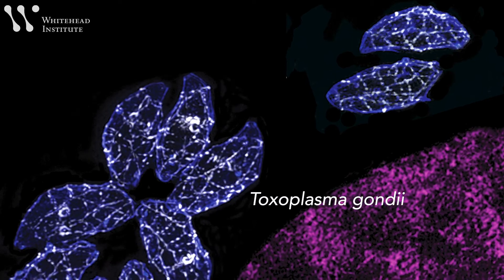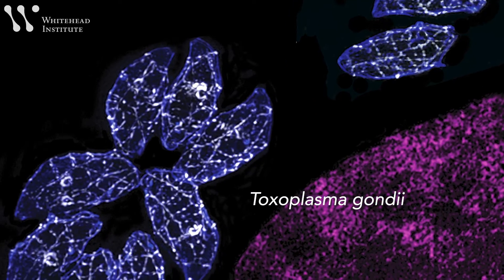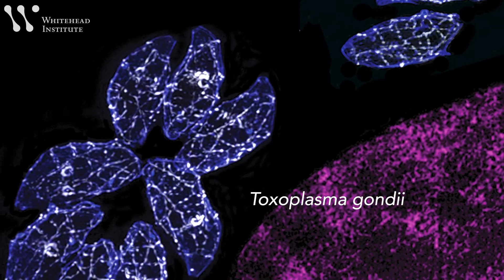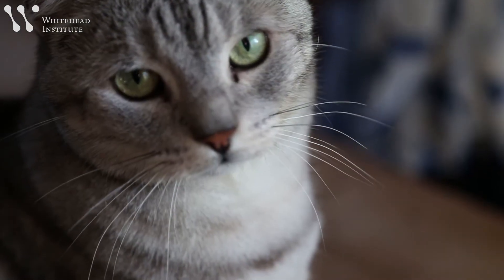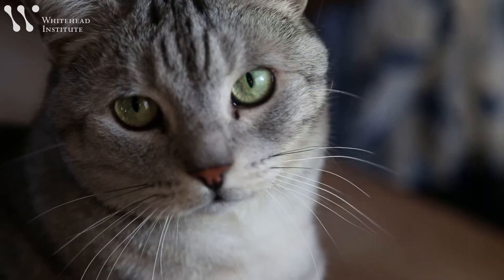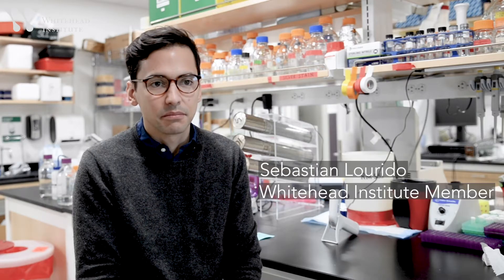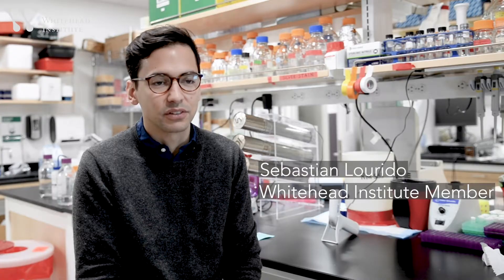Toxoplasma gondii is a single-celled parasite that causes a disease called toxoplasmosis. Infected cats can give the disease to humans when they shed cysts containing the parasite. Toxoplasma infects many, many people worldwide — estimates range from 10% in certain populations to upwards of 70% of individuals in others.